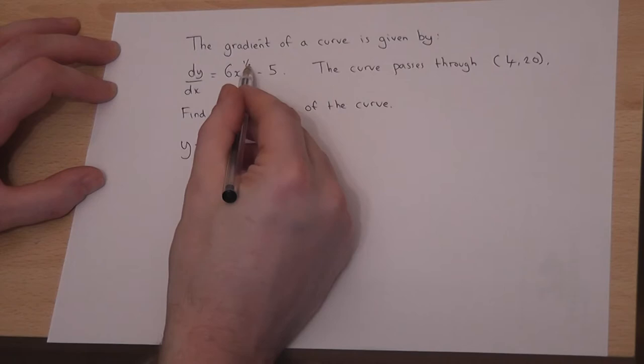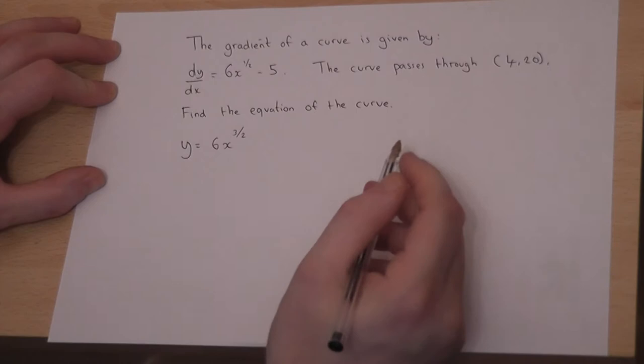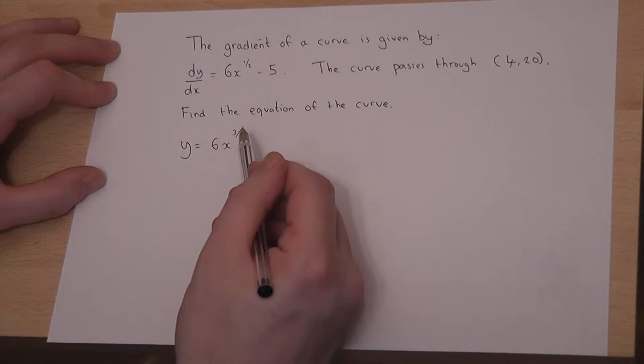So I get 6x. If I add 1 to the power, I get 1½, which is the same as 3 over 2. I then want to divide by the new power, which is a fraction.